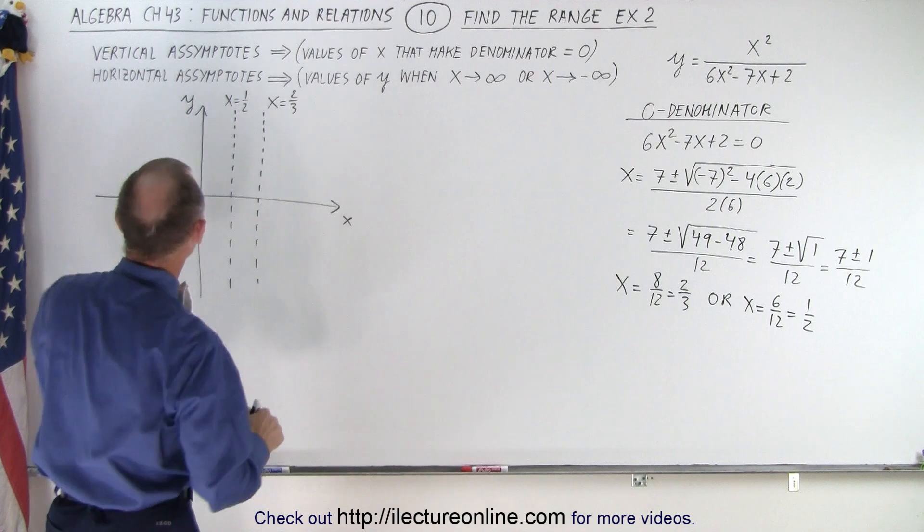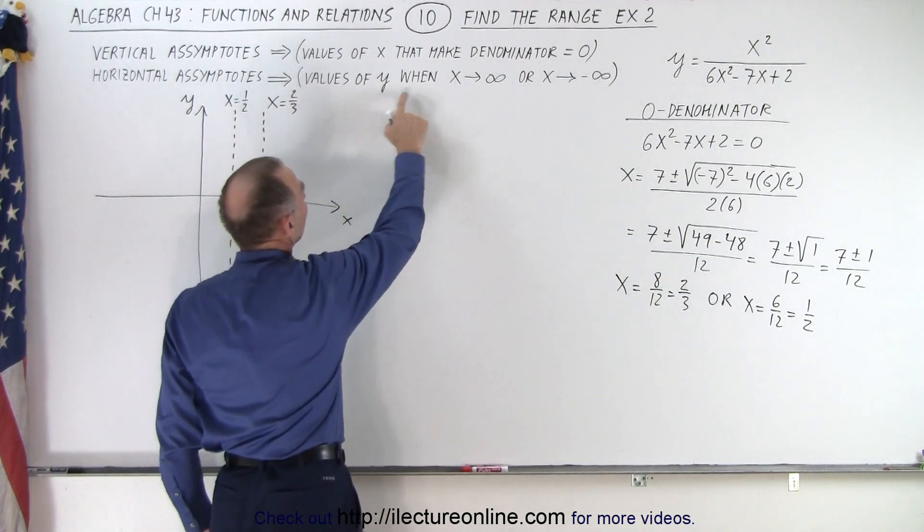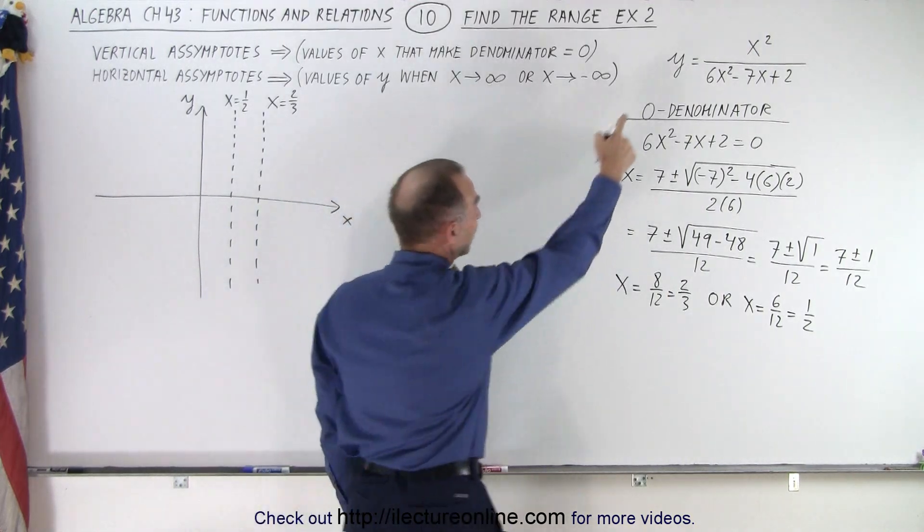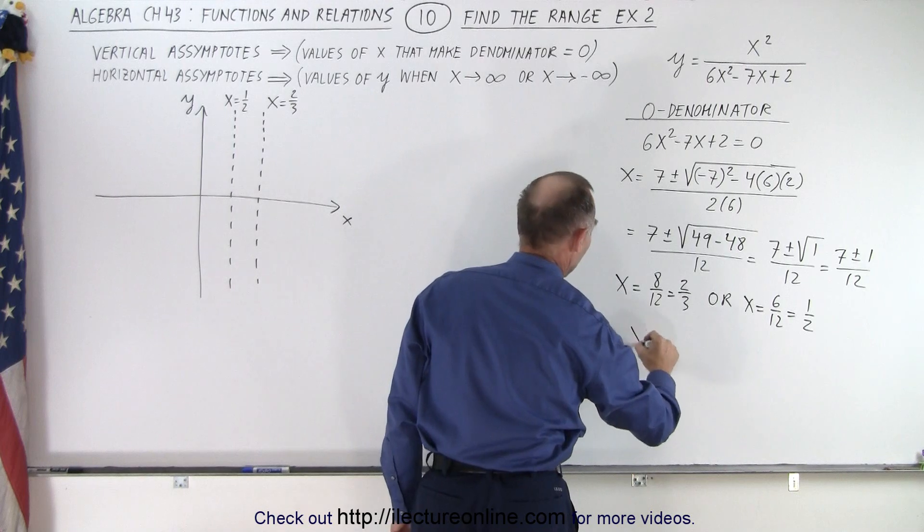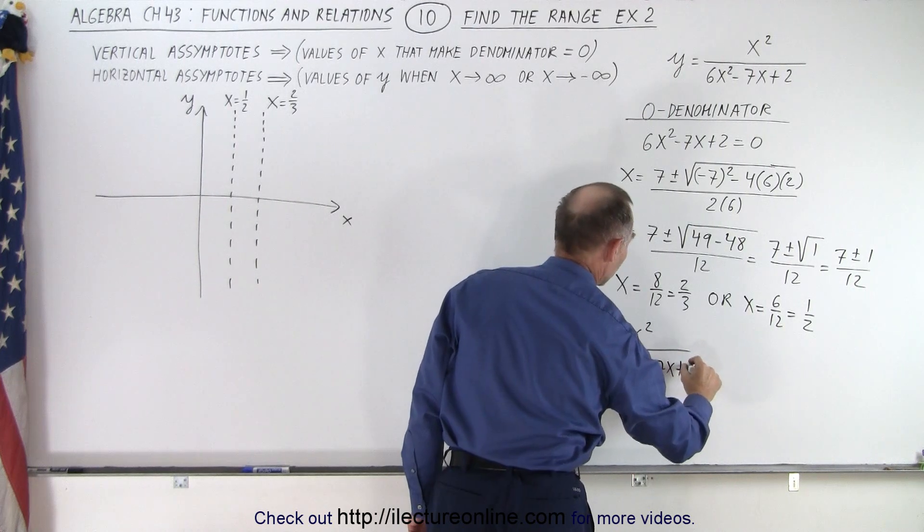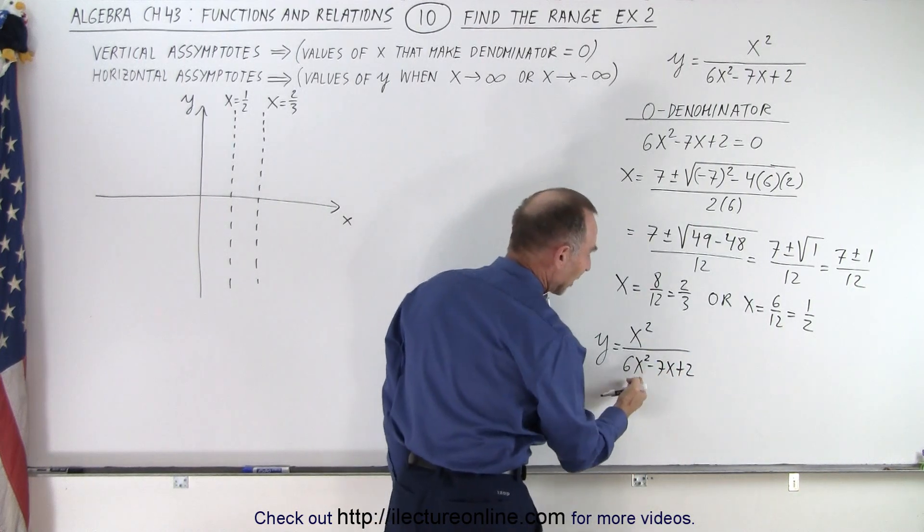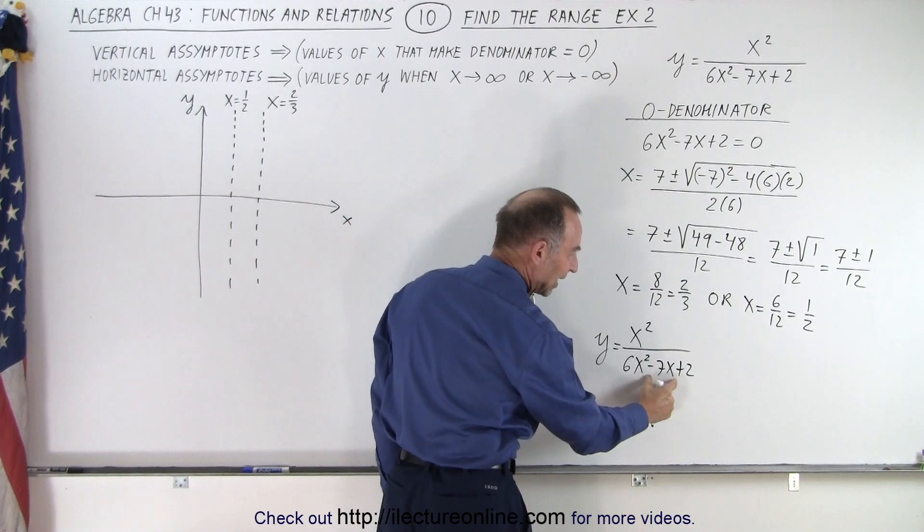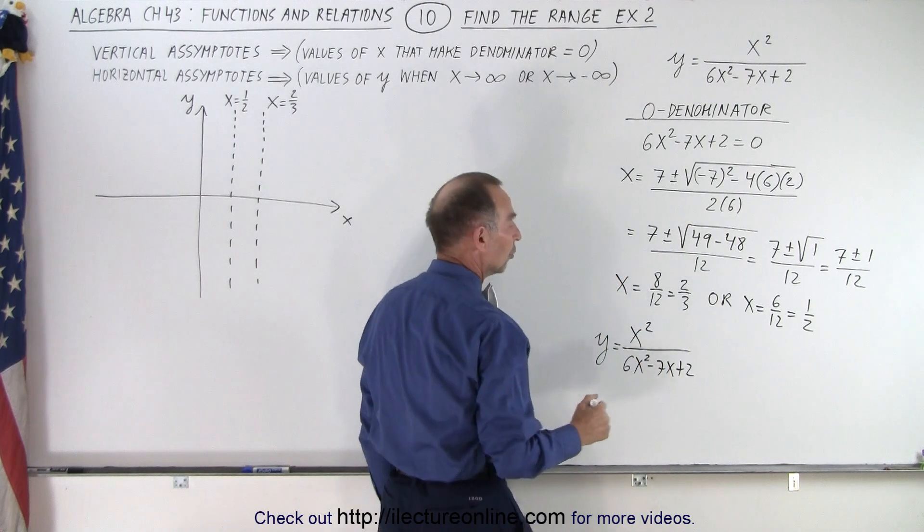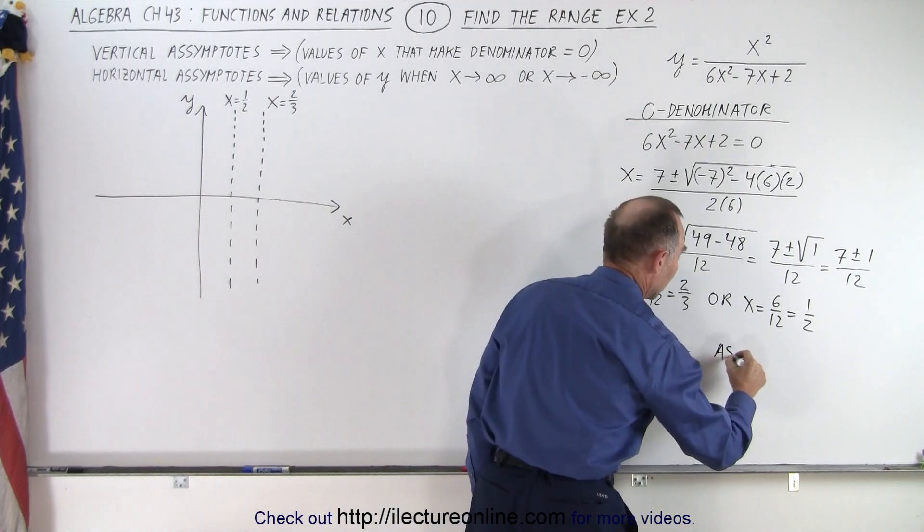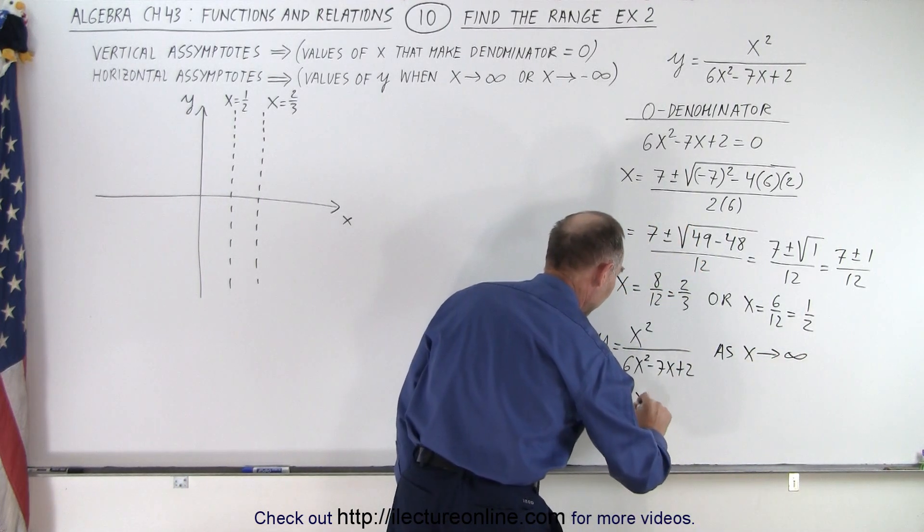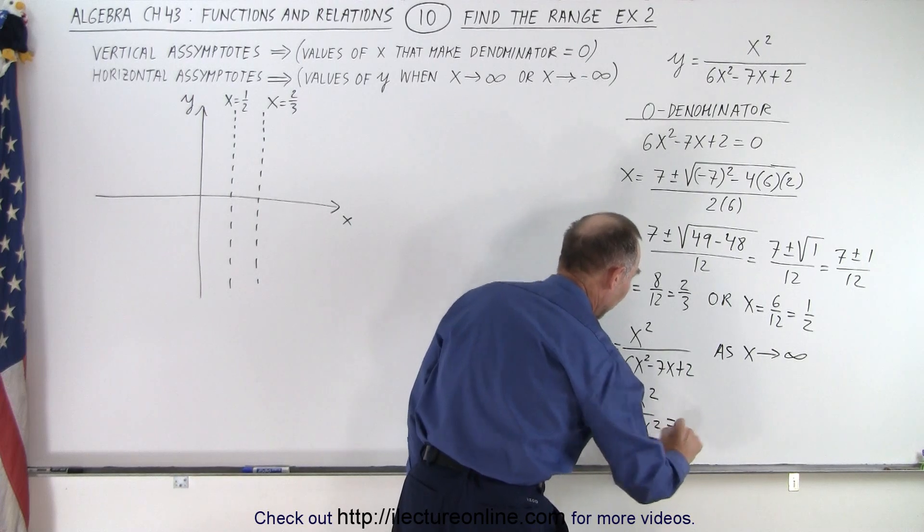Now what we're going to do is find the horizontal asymptotes by setting x to a very large value, let it approach infinity. So when we take our equation, y equals x squared divided by 6x squared minus 7x plus 2, if we let x become really large, then the minus 7x and the plus 2 become insignificant. And we only have to worry about this part of the equation. So as x approaches infinity, this becomes y equals x squared divided by 6x squared.